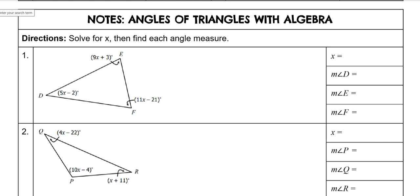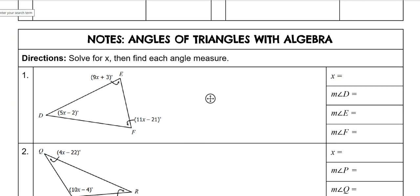So all the angles of a triangle have to add up to be 180. So all of these we're going to add together and set them equal to 180. So we need to add all of these x's together. Remember that we take the sign in front of them. So 9x plus 11x plus 5x.